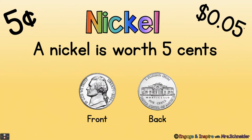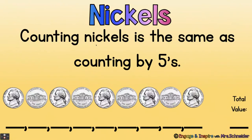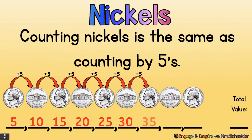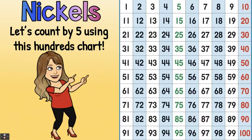Counting nickels is the same as counting by fives. Let's count these nine nickels to find the total value: five, ten, fifteen, twenty, twenty-five, thirty, thirty-five, forty, forty-five. Nine nickels is worth forty-five cents.